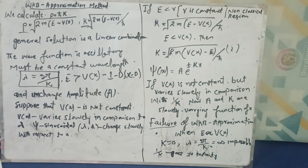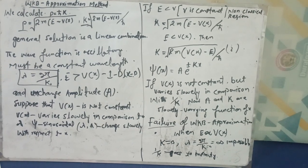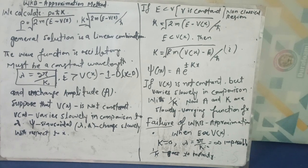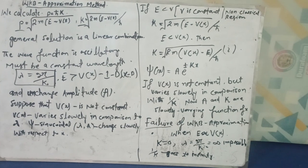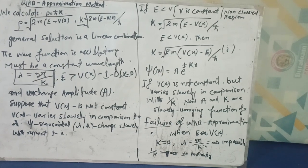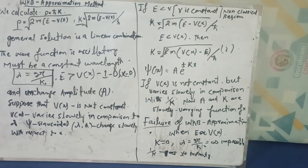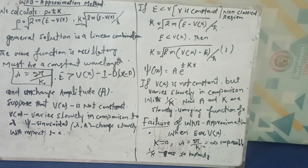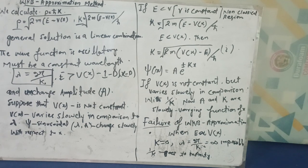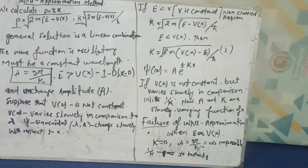The energy of the particle must be greater than the potential in this case. We suppose that the potential is not constant and the amplitude is also not constant, so V(x) varies slowly in comparison to wavelength. The potential and wave vector k are functions of x, so ψ is sinusoidal and the wavelength and amplitude change slowly with respect to x.